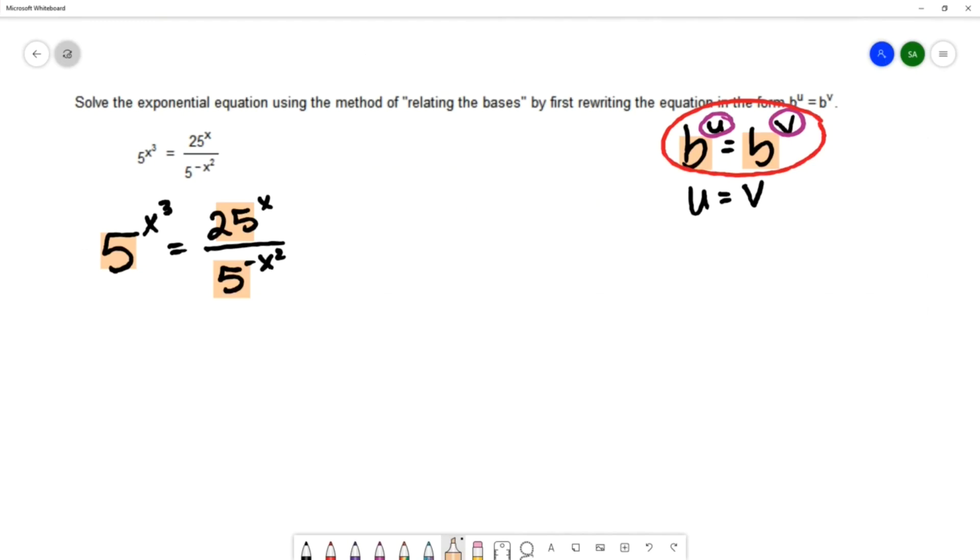So let's rewrite the 25 with a base of 5 so that we have all the same base. And 25 is equal to 5 squared.